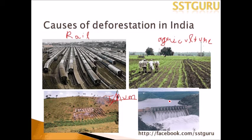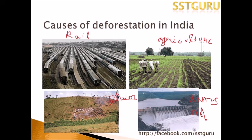Jhum cultivation is another cause — trees are cut for shifting cultivation, destroying forests. Additionally, constructing large dams in many parts of the country helps farmers with irrigation and produces clean hydroelectricity. However, these dams submerge lakhs of hectares of land containing jungles, resulting in a very significant loss of our valuable forests.